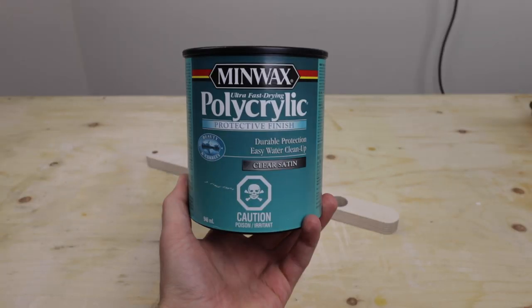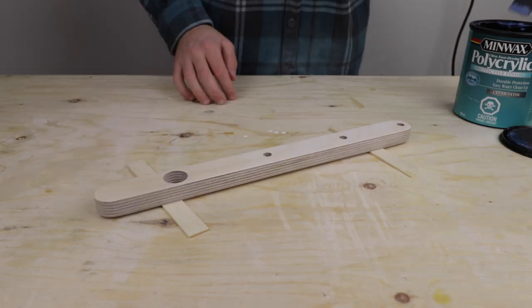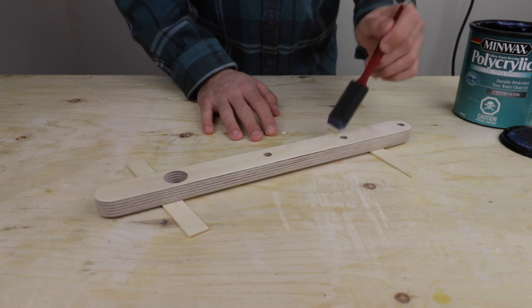Then I finished the wood with Minwax polycrylic in clear satin. I chose to use a low gloss finish so there'd be less glare from the light of the lamp bulb.